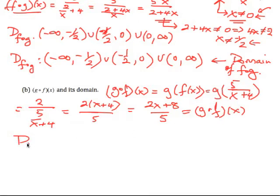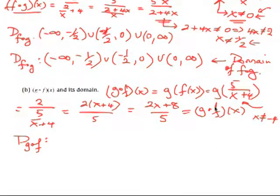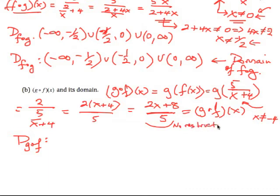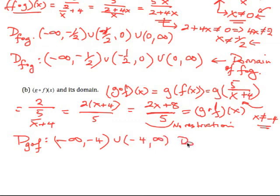For the domain of g∘f, we look for any restrictions on the input. Notice that x cannot equal −4, because f(x) = 5/(x+4) would require dividing by zero. Then we look at the composite result (2x+8)/5 — there are no further restrictions, since we can double any real number, add 8, and divide by 5. So the only restriction is x ≠ −4, giving domain (−∞, −4) ∪ (−4, ∞). That's how we work out composite functions and their domains.